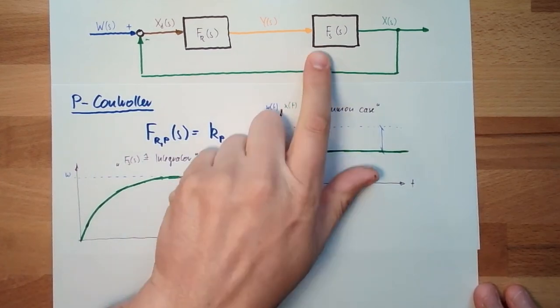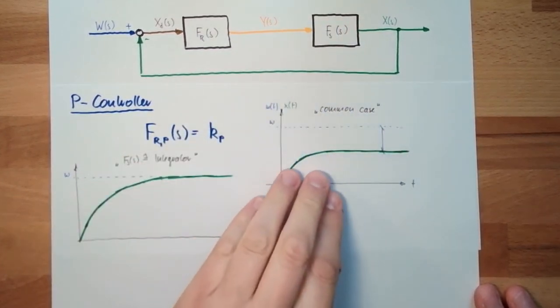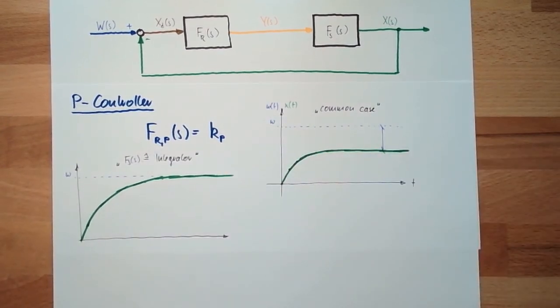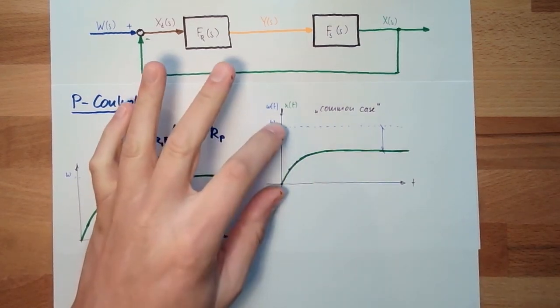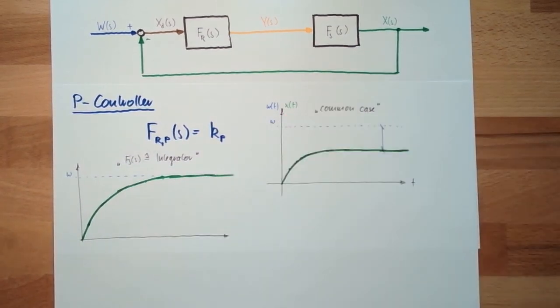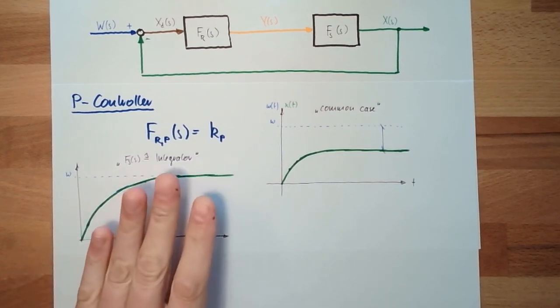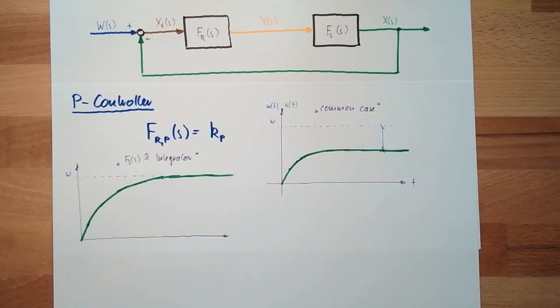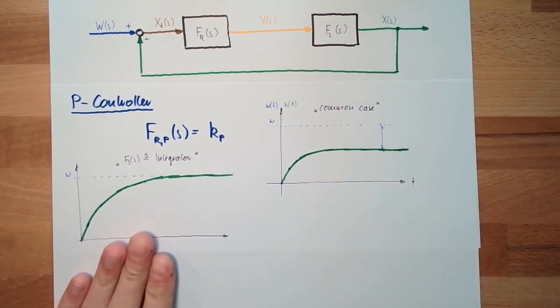Common case, when there is no integrator inside, then a P-controller will end up in a remaining controlling difference. P-controllers, big advantage, P-controllers are reacting very fast. There is a big difference, it immediately reacts. It is not waiting for something. P-controllers are fast, but usually we have a remaining difference. This would be a classical case where P-controller is best.